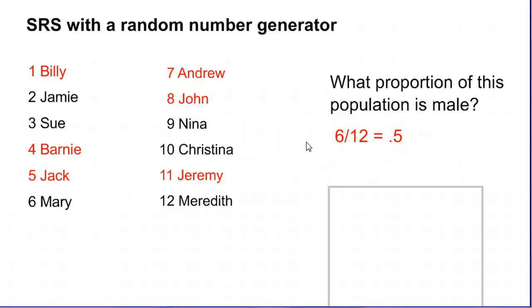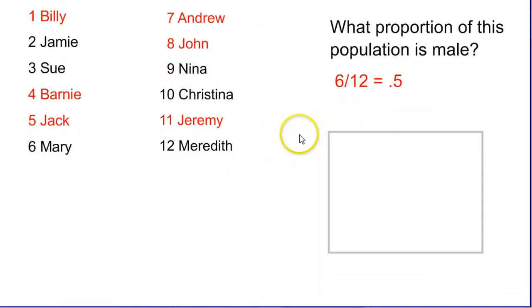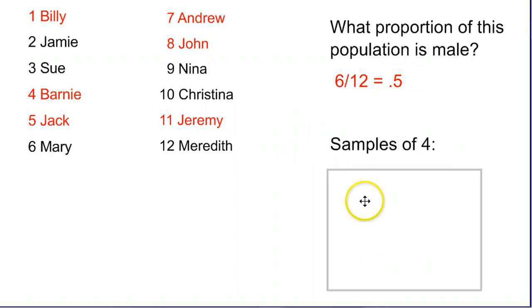However, if we are going to take random samples, let's say we use our calculator and come up with different random samples, we are going to get different results each time. For example, let's say we are taking samples of 4. First one we draw a 2, a 4, a 5, and an 11. That is what our calculator generates for random numbers. We would have 3 out of 4 males, because 4 is Barney, 5 is Jack, 11 is Jeremy, and then 2 is Jamie. So 3 out of the 4 would be male. And that 0.75 is not the same as our entire population, as we can see here.